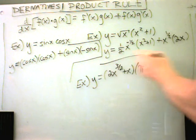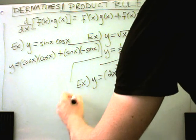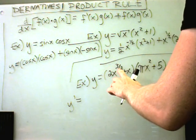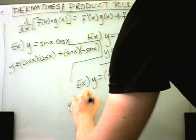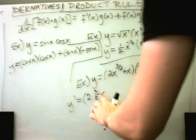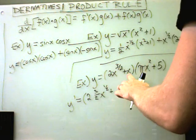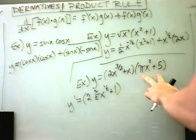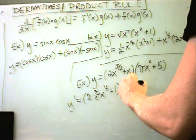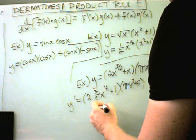Our last example here. Same idea. So if I take the derivative of 2x to the three halves, I'll multiply. So nothing happens to the two. I'll multiply the three halves by the x. I'll take one away. That'll give me positive one half plus the derivative of x is just one. I'll leave my other factor alone. So pi x squared plus five.